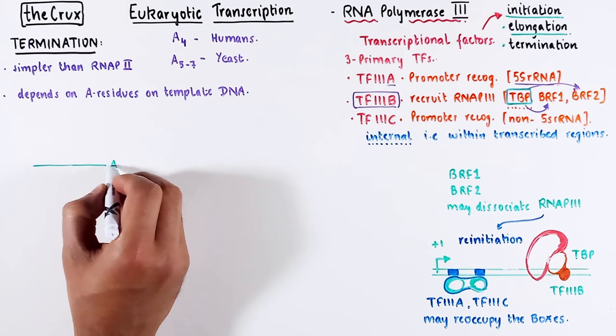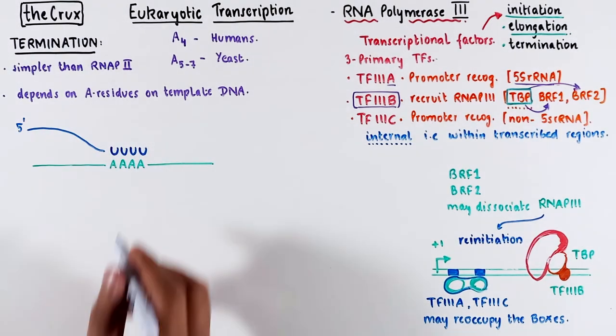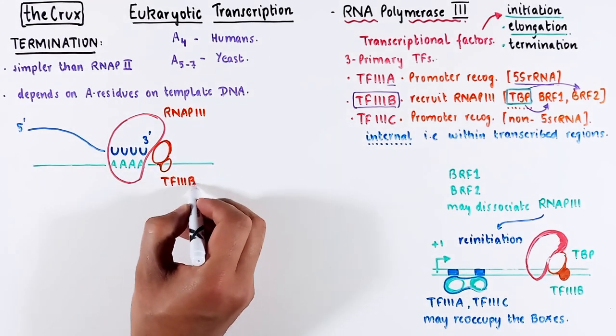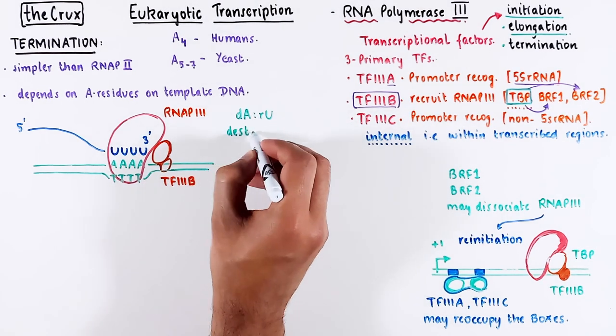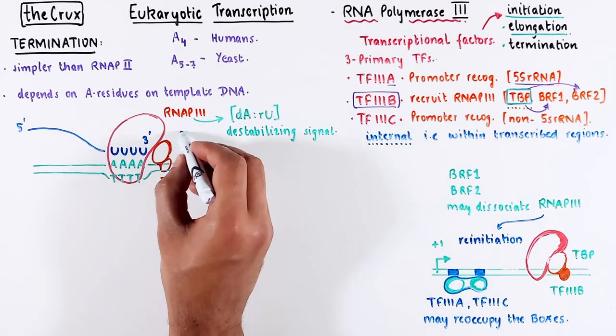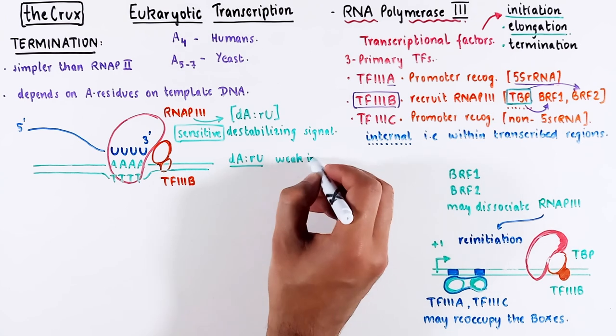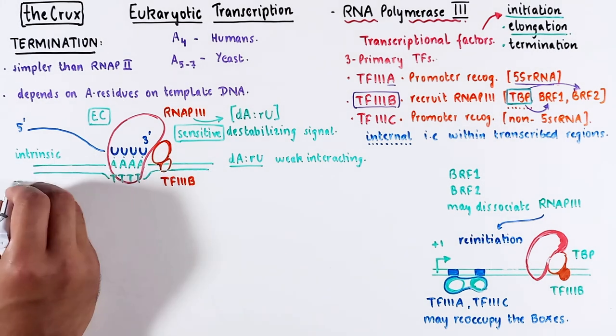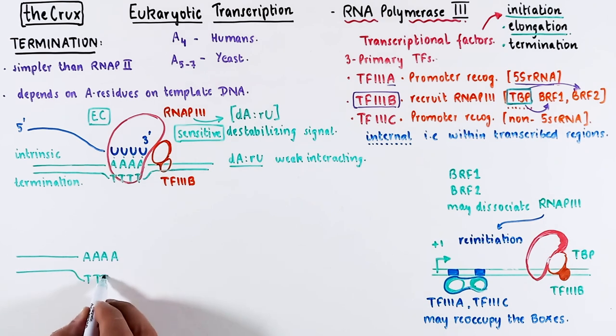Termination starts with the adenine stretch, which is converted into uracil on the RNA, creating an A and U hybrid at the polymerase active site. This hybrid serves as the termination signal for polymerase because POL3 is sensitive to these A and U hybrids. This sensitivity makes sense because A and U hybrids have relatively weak interaction. This concept is reminiscent of the intrinsic termination in bacterial transcription, which we have already discussed in the previous videos. Now let's add some more details to this classic view of termination.